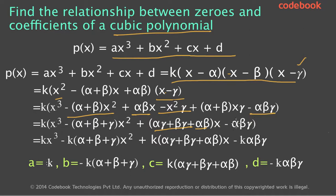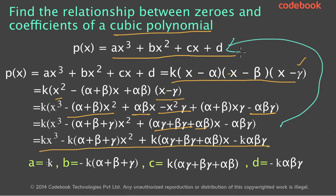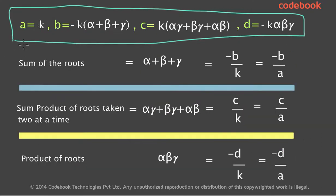Multiplying each term by k, we get: kx³ - k(α + β + γ)x² + k(αγ + βγ + αβ)x - kαβγ. Comparing this with the general form ax³ + bx² + cx + d, we can equate the coefficients: a = k, b = -k(α + β + γ), c = k(αγ + βγ + αβ), and d = -kαβγ.